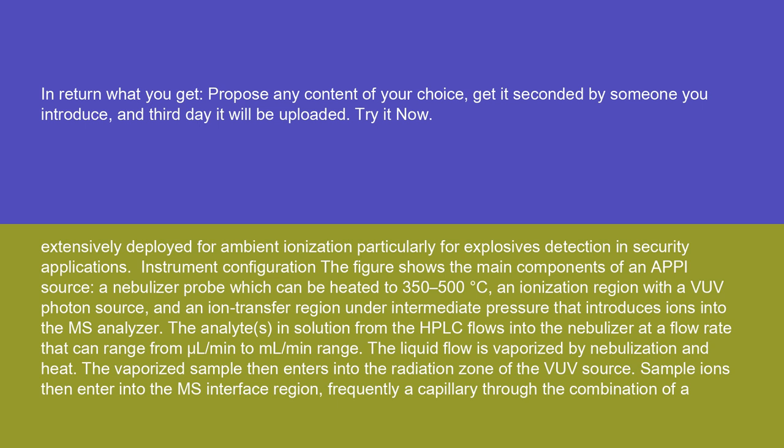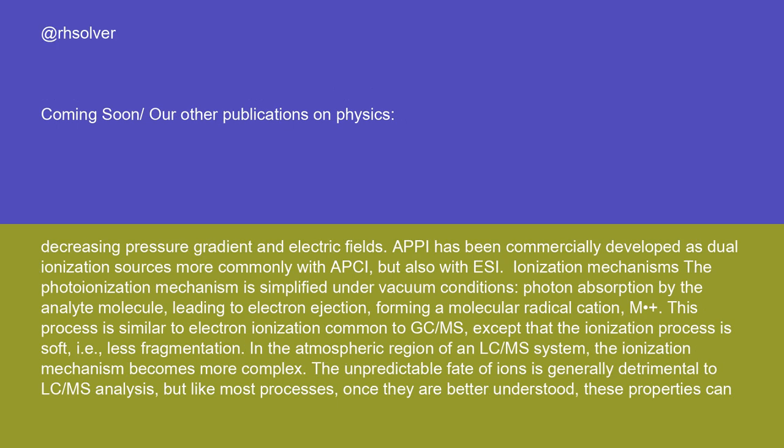Instrument configuration: the figure shows the main components of an APPI source — a nebulizer probe which can be heated to 350 to 500 degrees Celsius, an ionization region with a VUV photon source, and an ion transfer region under intermediate pressure that introduces ions into the MS analyzer. The analyte solution from the HPLC flows into the nebulizer at a flow rate ranging from μL/min to mL/min. The liquid flow is vaporized by nebulization and heat, and the vaporized sample then enters the radiation zone of the VUV source. Sample ions then enter the MS interface region, frequently a capillary, through a decreasing pressure gradient and electric fields. APPI has been commercially developed as dual ionization sources, more commonly with APCI but also with ESI.